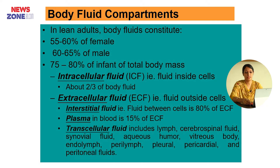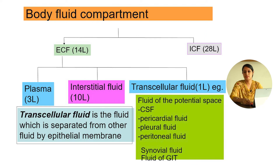Intracellular fluid is the fluid inside the cells, about two-thirds of the body fluid. Extracellular fluid includes fluid outside the cell: interstitial fluid, plasma, and transcellular fluid. Interstitial fluid — the fluid between cells — is about 80 percent of ECF, and plasma in blood is 15 percent of ECF. In the flow chart: extracellular fluid is 14 liters and intracellular fluid is 28 liters. ECF is further classified into plasma 3 liters, interstitial fluid 10 liters, and transcellular fluid 1 liter.